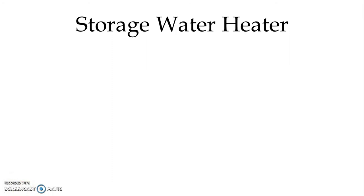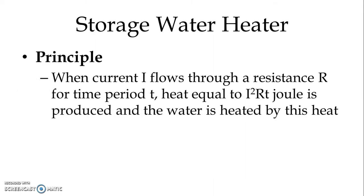Now the next type is the storage water heater. The application of the storage type of water heater is similar to the immersion type — we use the heater to heat the water. The principle is also the same: when current I flows through a resistance R for time period T, heat equal to I²RT joules is produced and the water is heated. The resistive heating principle applies to both the storage type and the immersion type of water heater.